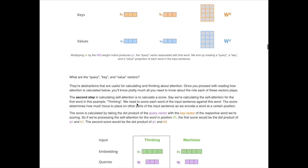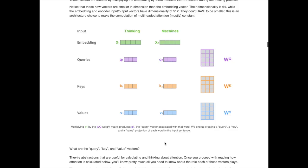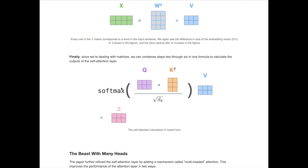Self-attention uses query, key, and value matrices. Weight matrices project the original input into the query, key, and value embedding space. The query matrix is multiplied by the key matrix, normalized by the length of the embedding, passed through a softmax, and then multiplied by the value. This is the mechanism behind dot product attention used in the BERT model.